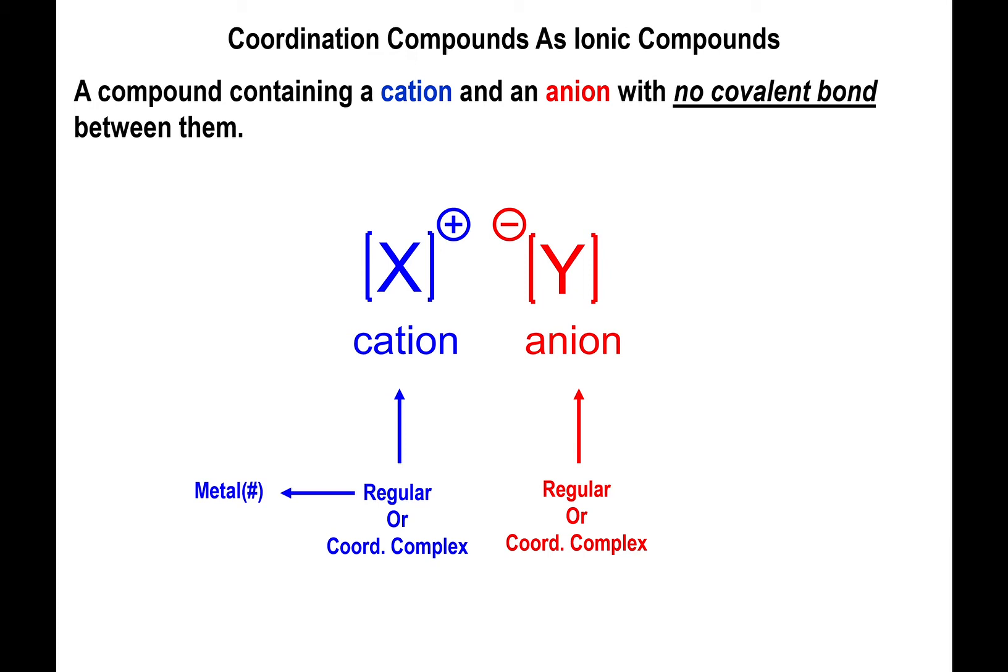In the case where you have a regular coordination complex, for a regular ionic substance you might need to spell out the oxidation state of the metal if you have a regular anion. They usually will end with ide, ate or ite. These are anions that are not part of the complex but are there to balance the charge of the entire thing.